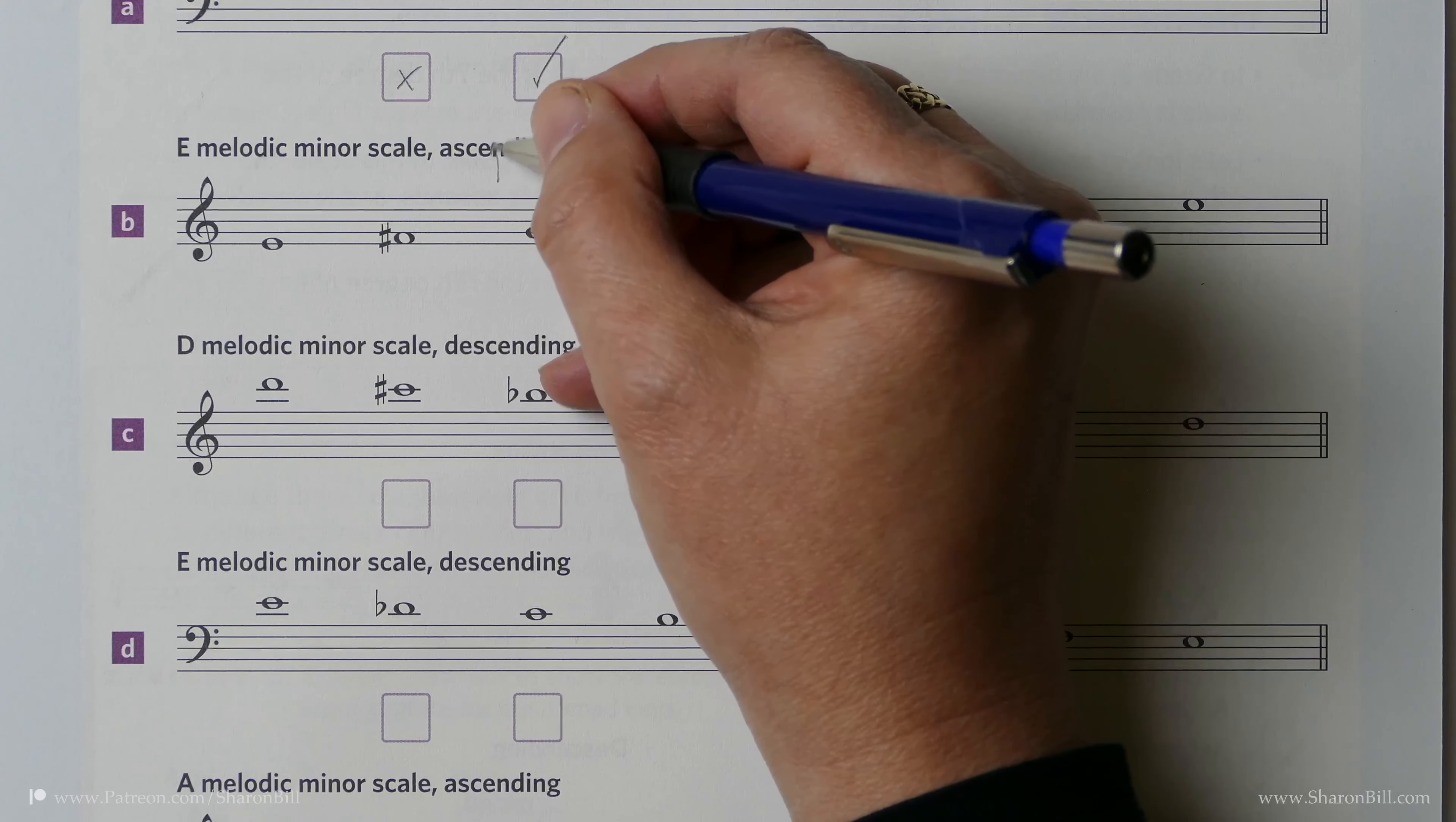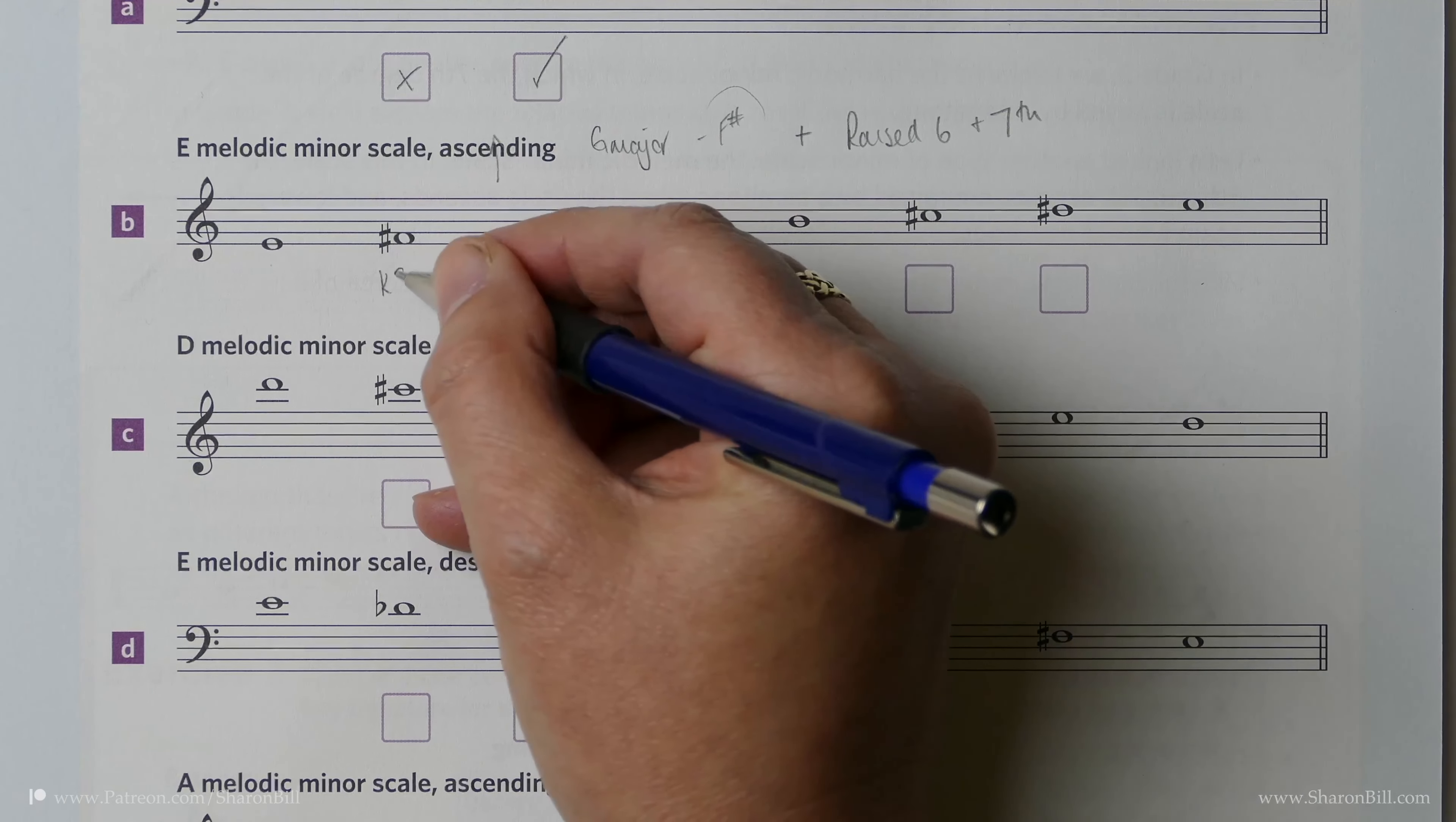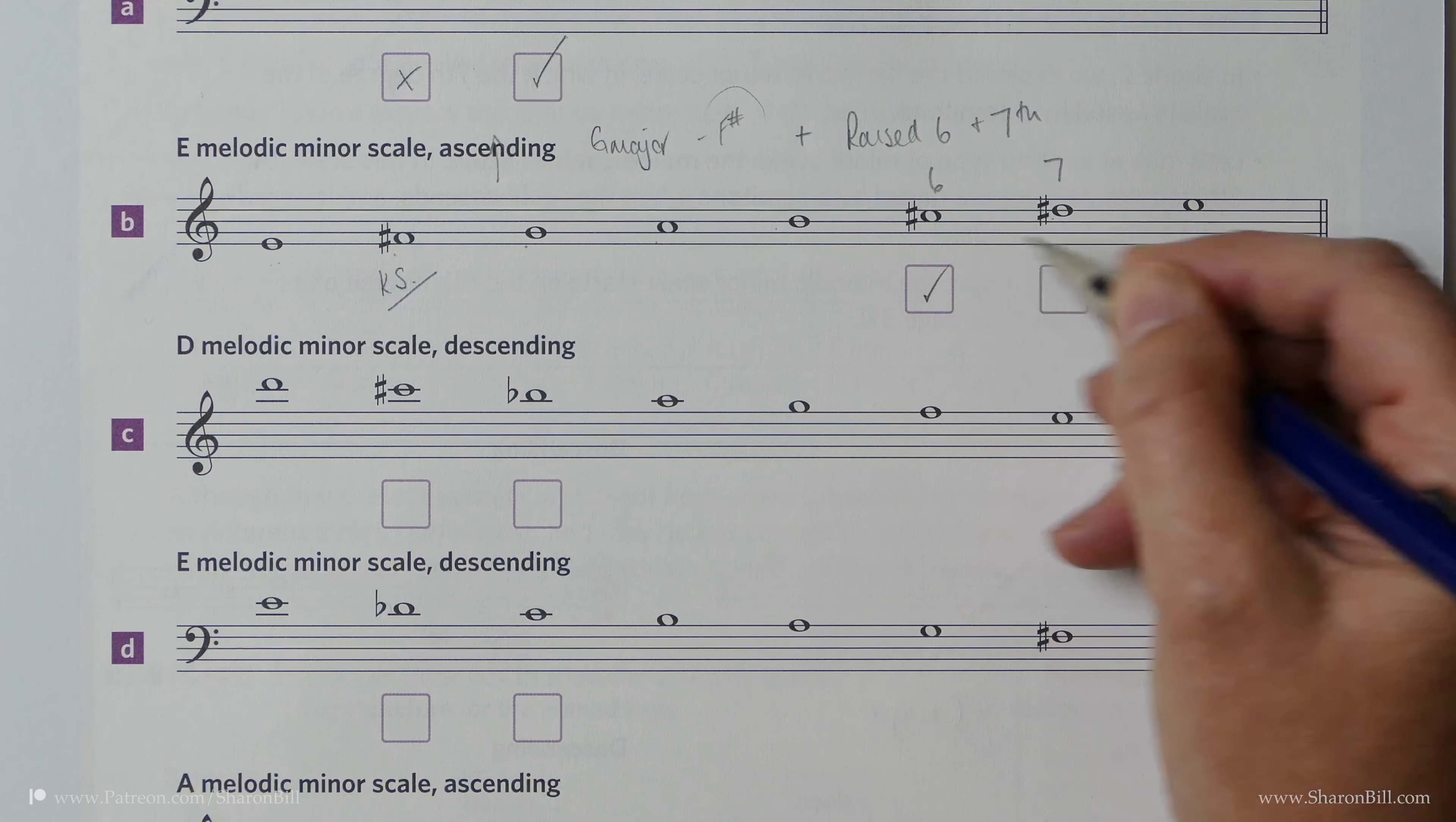And so that would have a key signature of F sharps, so that will be present. And then because this is the ascending version, we need a raised sixth and seventh degrees of the scale. So here we have an E and F sharp, so that would be part of the key signature. And then one, two, three, four, five, this is the sixth, this is the seventh, and they've been raised as an accidental, and so that's correct.